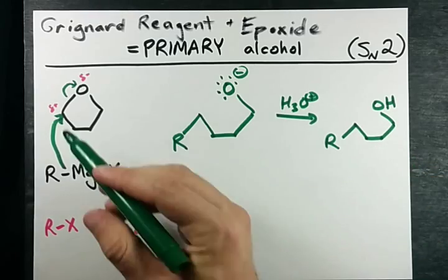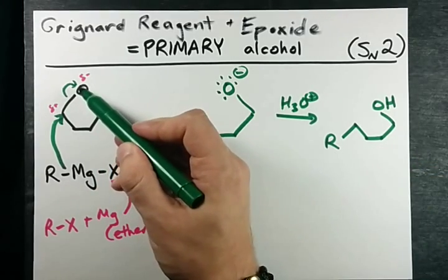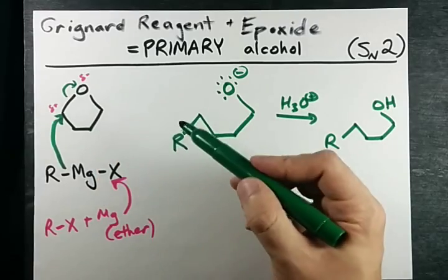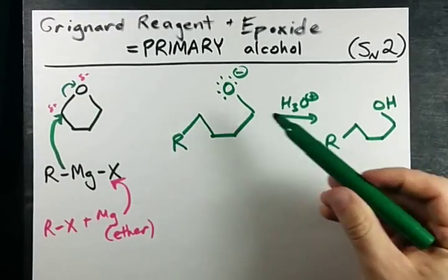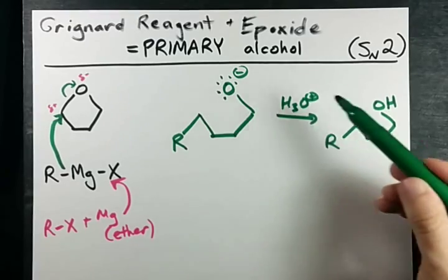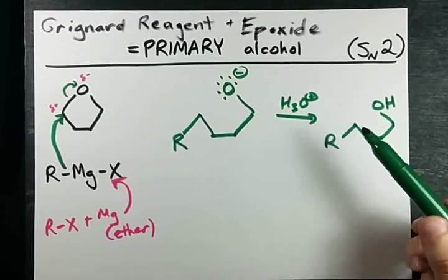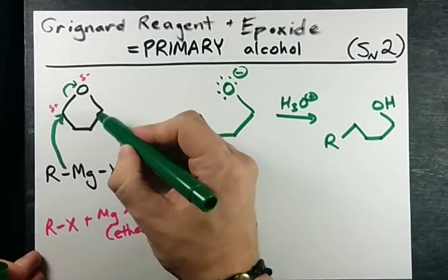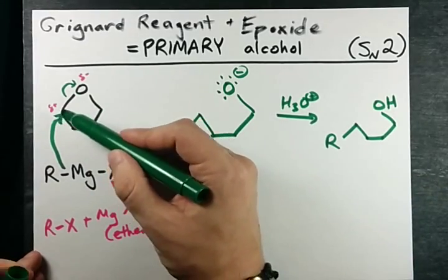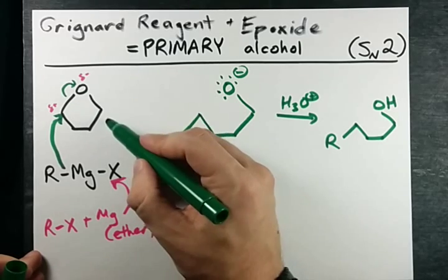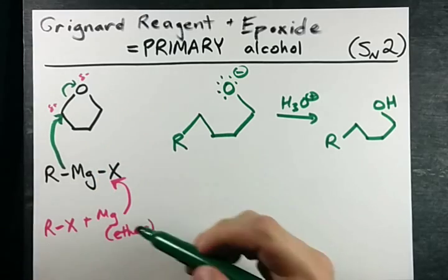Because we broke a carbon–oxygen bond in the reaction of the Grignard with the epoxide, this oxygen is only attached to one carbon, making it a primary alcohol. The number of carbons in the original ring — it was a five-membered ring, but one of them was oxygen — so it was one, two, three, four carbons.